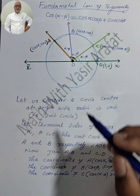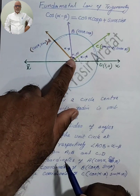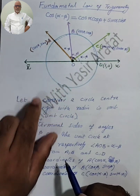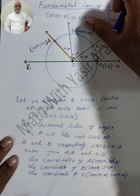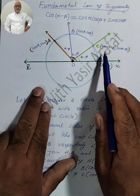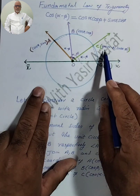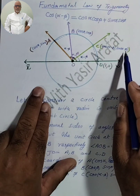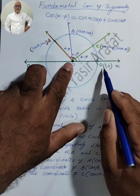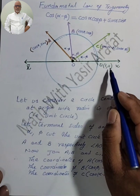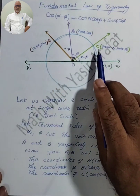The coordinates of A, with terminal arm OA at angle α, will be (cos α, sin α). Similarly, the coordinates of B with terminal angle β will be (cos β, sin β). The coordinates of C — terminal side OC with angle α minus β — will be (cos(α-β), sin(α-β)). Since this is a unit circle with radius 1, OD = 1, so coordinates of D are (1, 0).